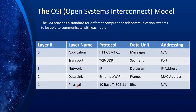Layer one is called the physical layer, and this is literally the medium through which information travels. This could be fiber optic cables, twisted pair cables, or coax cables if they are wired, or wireless if there are wireless devices. Each one of those has a precise protocol — for instance, for twisted pair the protocol is 10 Base-T, and for wireless it's 802.11. The data unit is called bits, and there is no addressing scheme defined here.